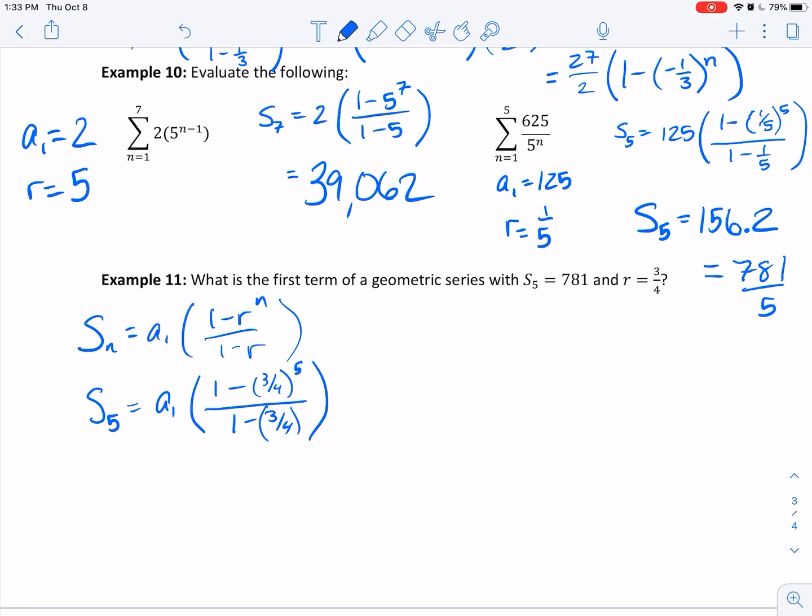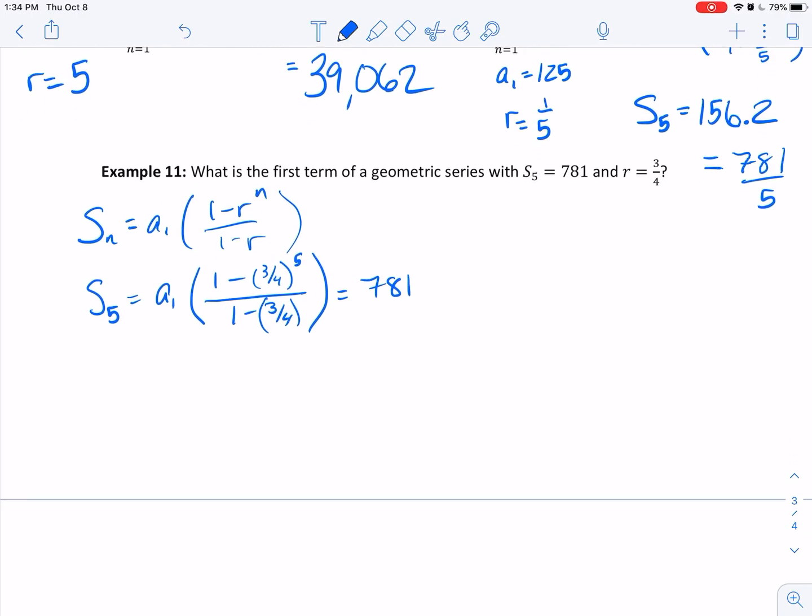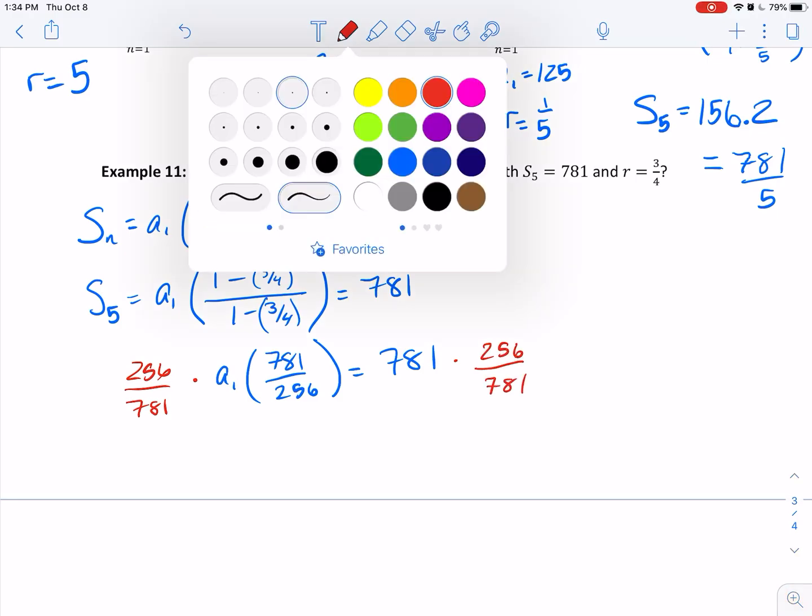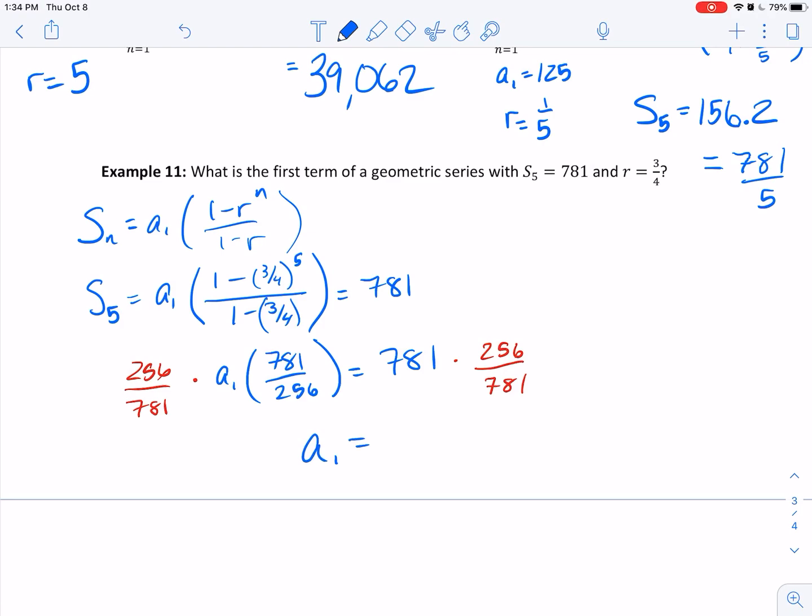I'm going to use my calculator and say 1 minus 0.75 raised to the fifth over 1 minus 0.75. I get a sub 1 times 781 over 256. Do you notice anything that makes that nice? I can multiply both sides by 256 over 781, and our a value, a sub 1, becomes 256.